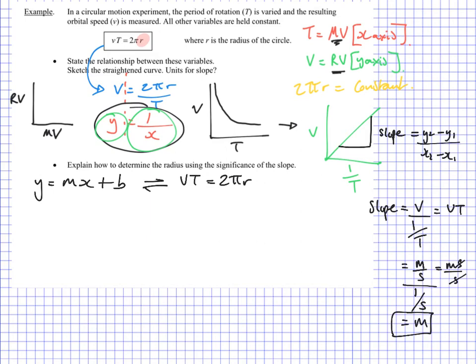First of all, we can use this direct value for slope and think about this as its own separate entity. So we can say that the slope value is equal to vt. Well, in our equation, vt is equal to 2πr. So we can just extend this and say that the slope is equal to 2πr. And so slope divided by 2π is going to give you r. And you can solve. Go ahead.